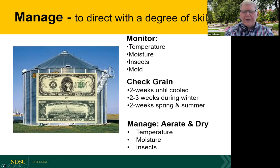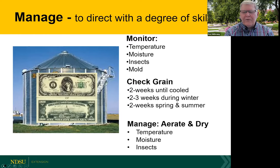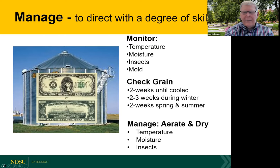It's critical that we monitor not only the temperature but also the moisture. I recommend checking stored grain every two weeks until it's cooled down for winter storage, maybe every two to three weeks during the coldest time of the year, and then as temperatures start moderating in the spring, going back to checking every two weeks. When we look at spring options, we're really thinking about running fans or removing grain — either aerating or drying — to handle insect or moisture problems.